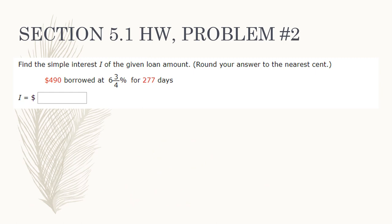Our next example comes straight from your homework. It's important we go through this because there are a couple of things that make it a bit more complicated than the last problem, though the idea is exactly the same. It says: find the simple interest I of the given loan amount. Round your answer to the nearest cent, meaning round to two decimal places. There is $490 borrowed at six and three-quarters percent interest for 277 days.